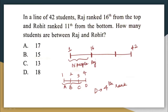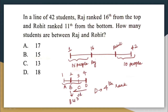When I say that Rohit is 11th from the bottom, this is the position of Rohit. Rohit is 11th from the bottom, or I can say that there are 10 people who have rank after Rohit. Using the same example: when I say B is 3rd from the bottom, the last person has 4th rank. Comparing from this side, B is 3rd from the bottom, which means there are 2 people who have rank after B.